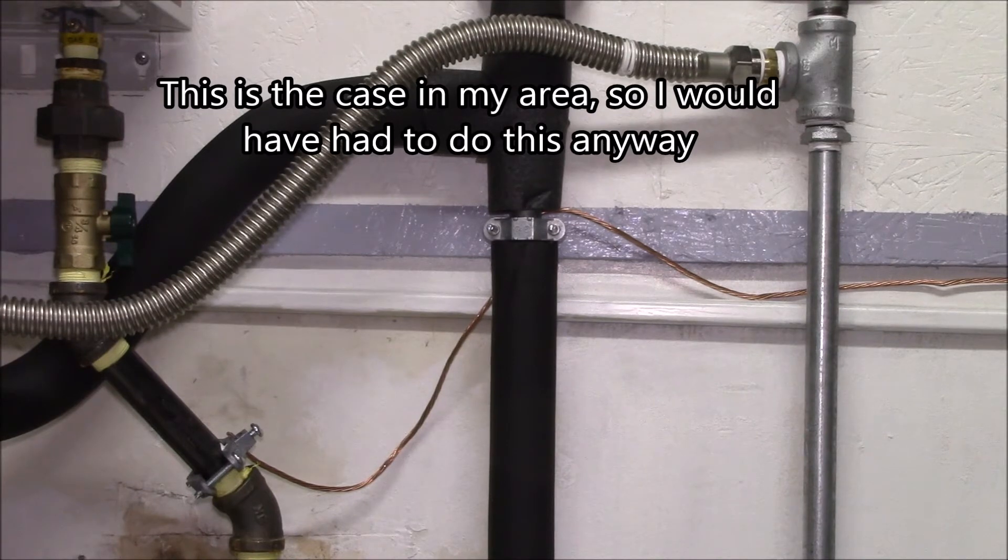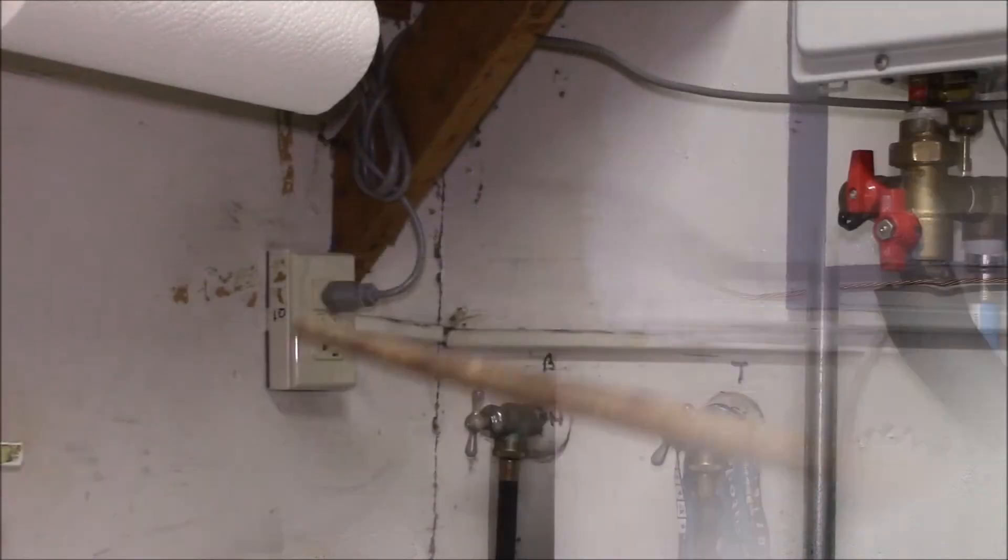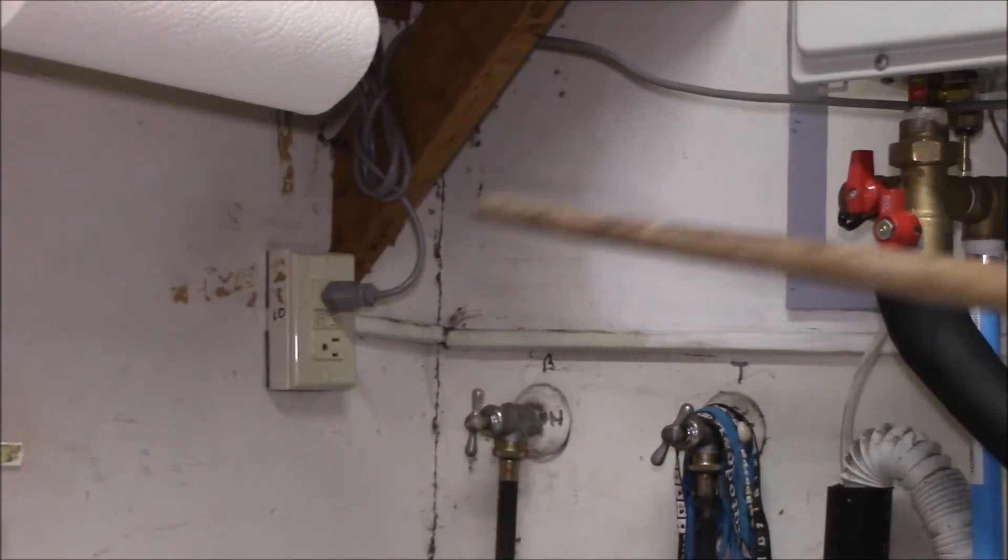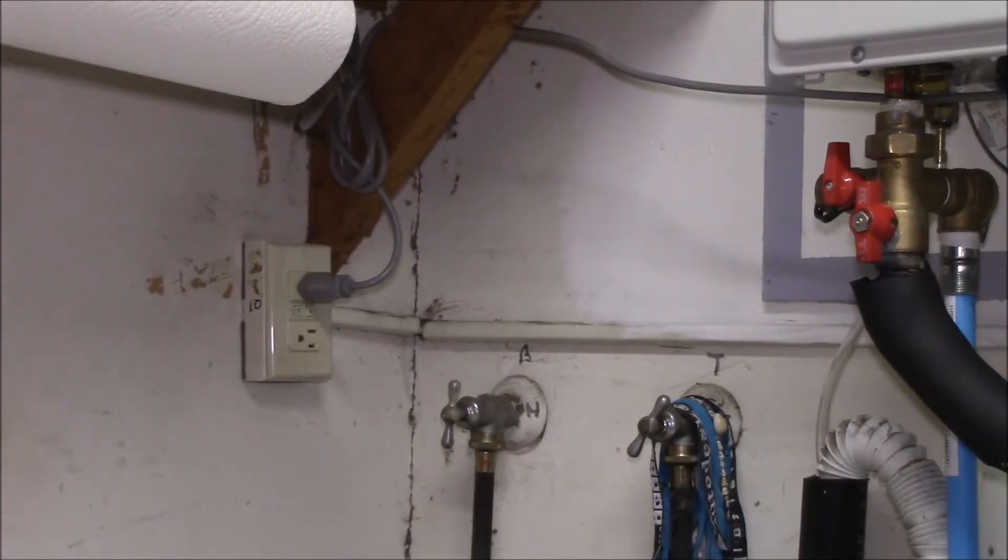I think they're starting to require that in some areas even on tank type water heaters. So the last item here, I replaced the receptacle there with a GFCI outlet, and then you have the grounding jumper bonding all the pipes to ground.